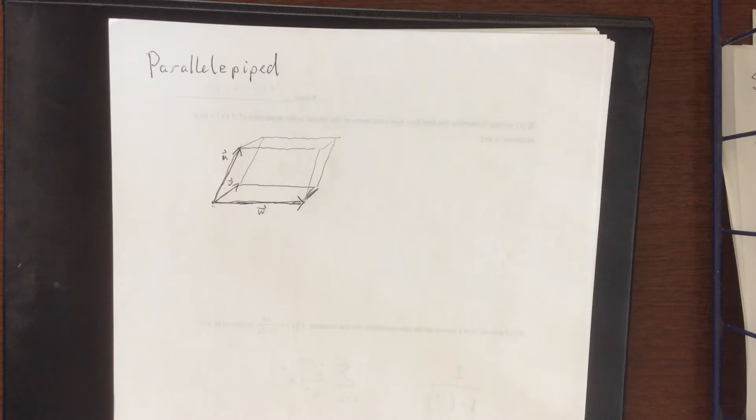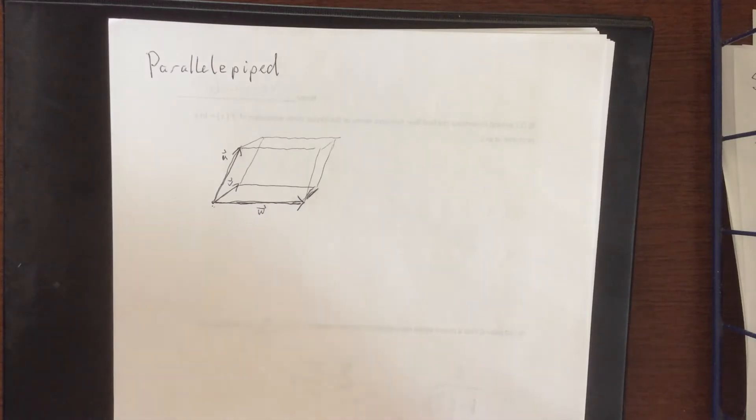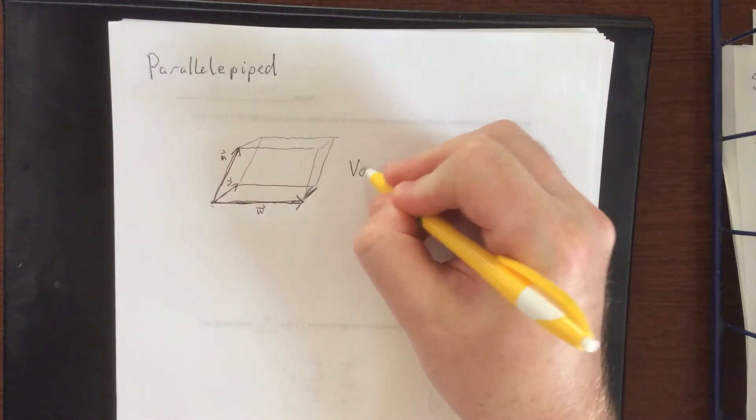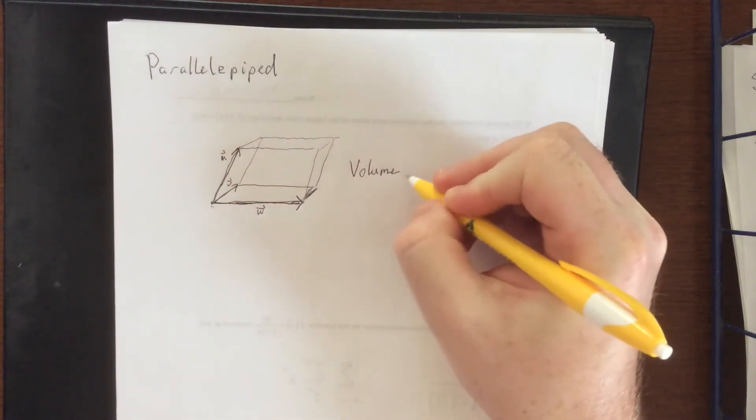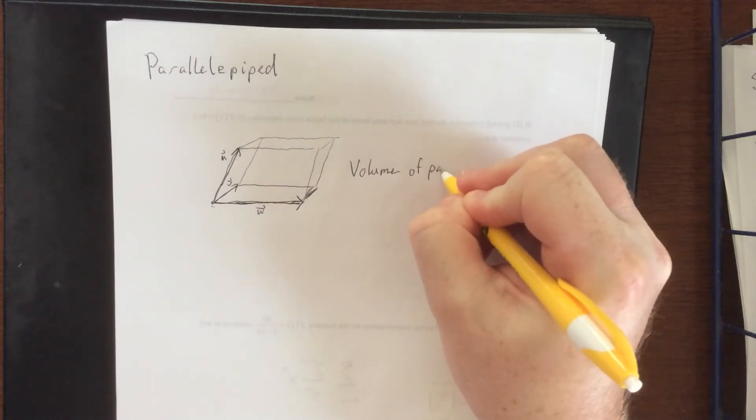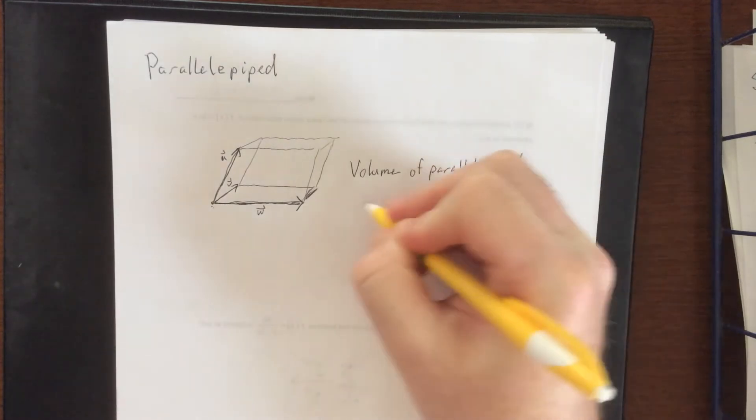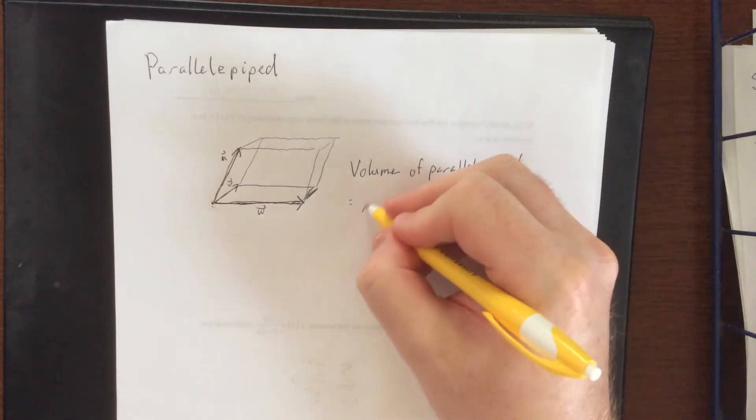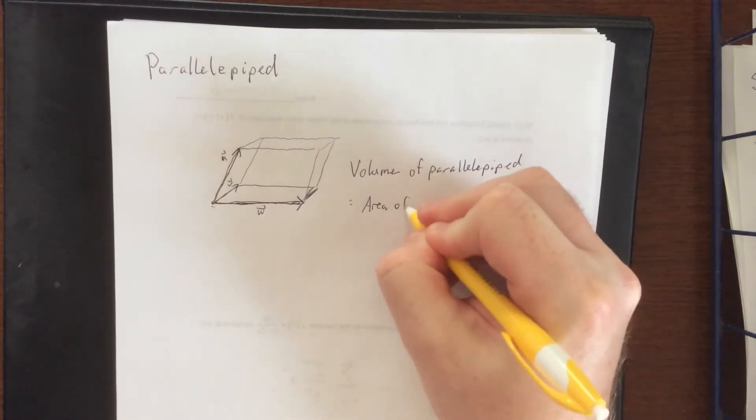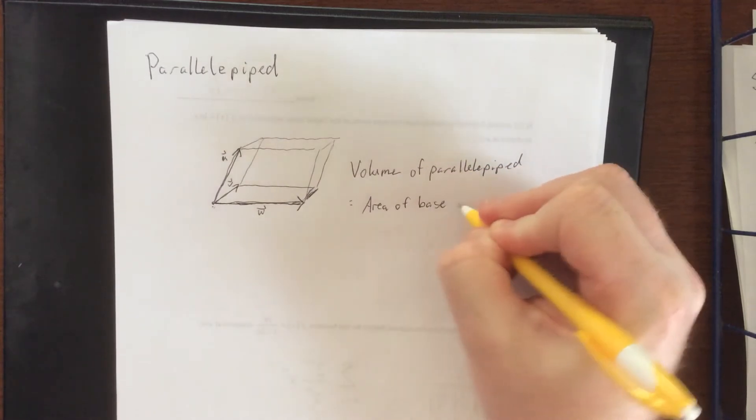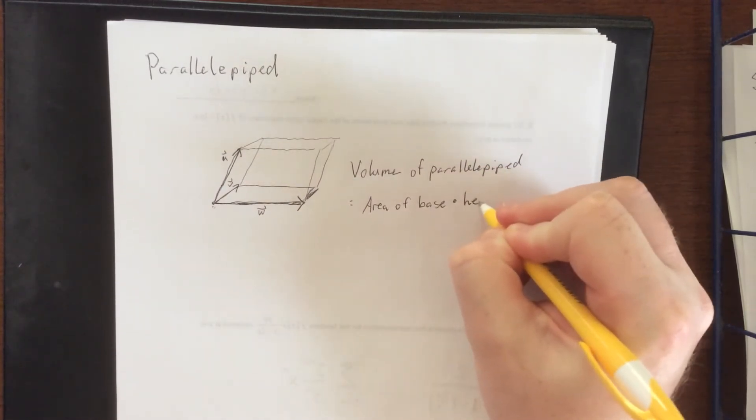Now with that in mind, the volume of a parallelopiped is calculated very similarly to how you would calculate the volume of a box. The volume of the parallelopiped is going to be equal to the area of the base times whatever the height happens to be.